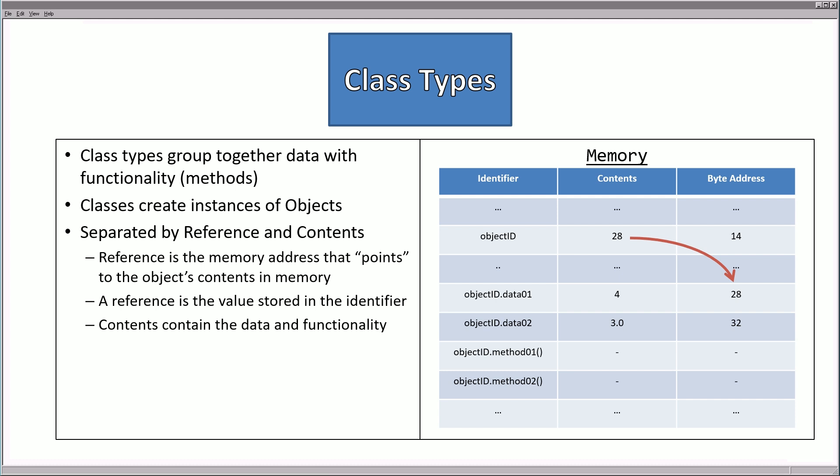You create a class, a classification of objects. It's also important to keep in mind that class types are separated by their references and their contents. The reference is the memory address that points to the object's contents in memory. The reference is the only value that's stored inside of an identifier. The contents is what contains the data and the functionality.